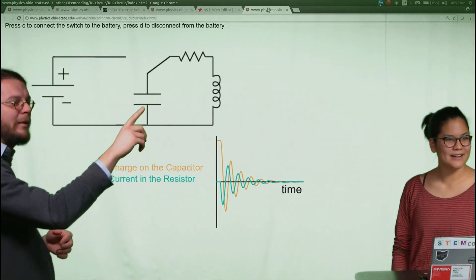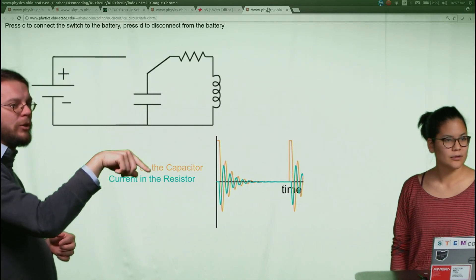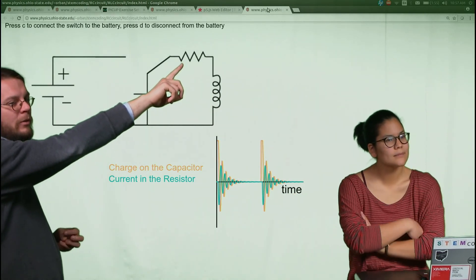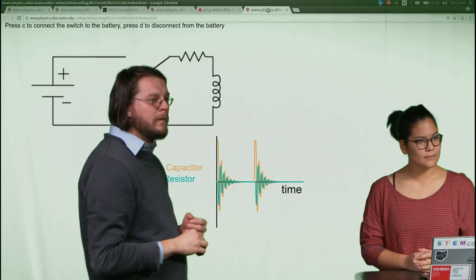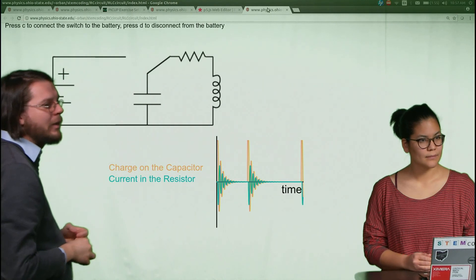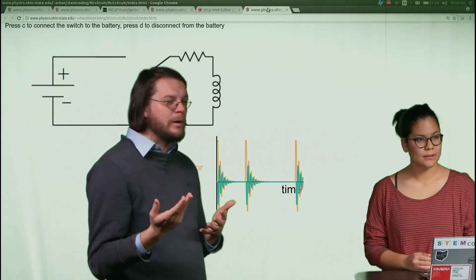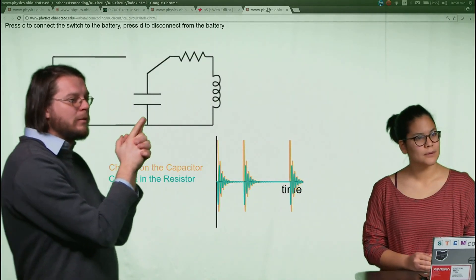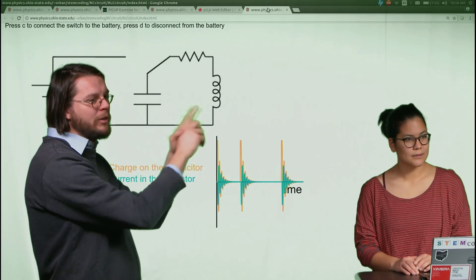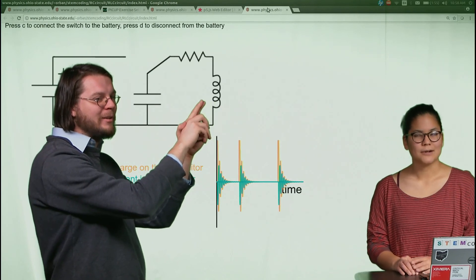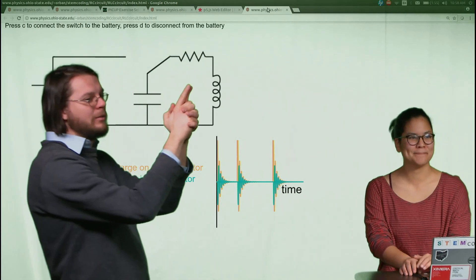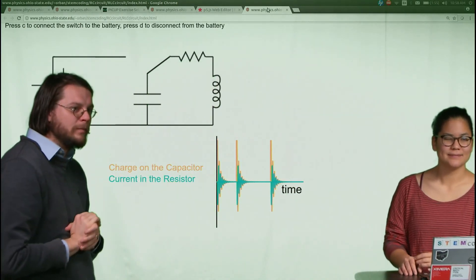The capacitor is acting like a battery, pushing charge through the rest of the circuit. Current through the resistor causes energy loss as heat, so you'd expect things to decay to zero over time. But the inductor is interesting — the more current through it, the larger its magnetic field, and it can store energy in that field. So energy from the capacitor gets transferred to magnetic field energy in the inductor, which then acts like a battery driving current back through the circuit. This goes back and forth until all the energy is dissipated in the resistor.